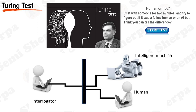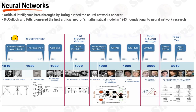The Imitation Game remains a fascinating and influential concept in AI research, driving scientists and engineers to develop increasingly advanced artificial intelligence systems. Following Turing's groundbreaking work, the concept of neural networks started to take shape. Inspired by the structure and function of the human brain, researchers began to explore the possibility of creating artificial systems that could learn and adapt. In 1943, Warren McCulloch and Walter Pitts introduced the first mathematical model of an artificial neuron, marking the beginning of neural network research. Their work laid the foundation for understanding how neurons could be interconnected to form a network and perform complex computations.